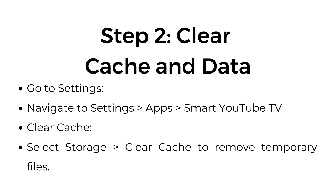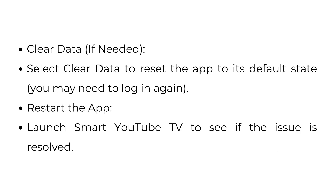Step two: clear cache and data. Go to settings, navigate to Settings > Apps > Smart YouTube TV. Select Storage > Clear Cache to remove temporary files. If needed, select Clear Data to reset the app to its default state — you may need to log in again. Then launch Smart YouTube TV to see if the issue is resolved.